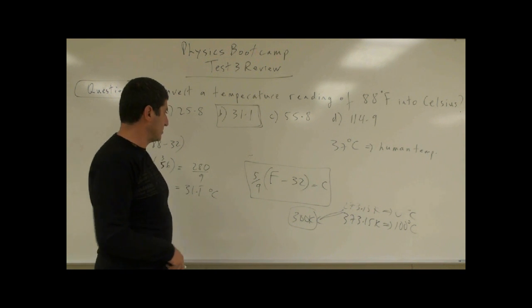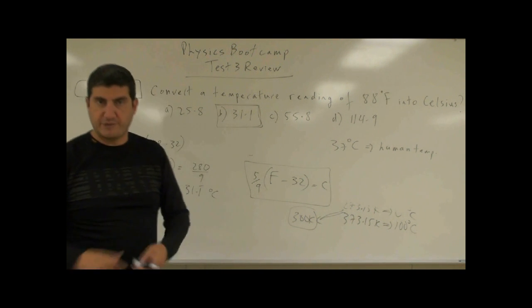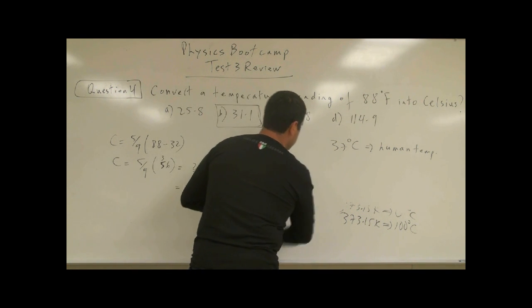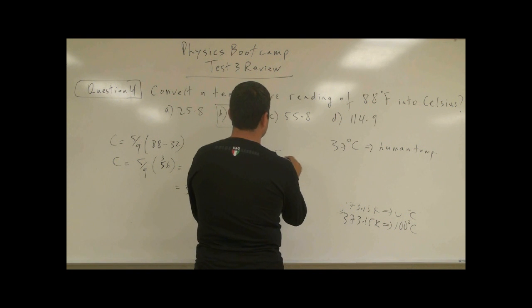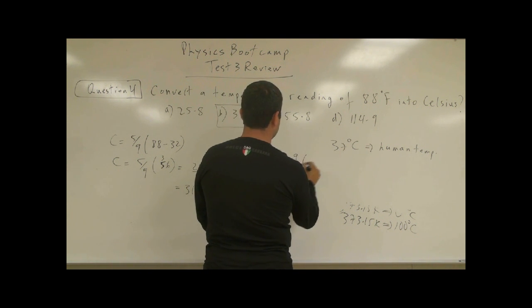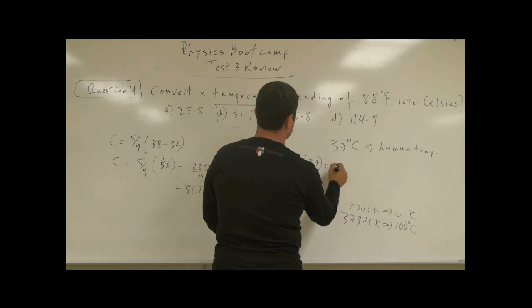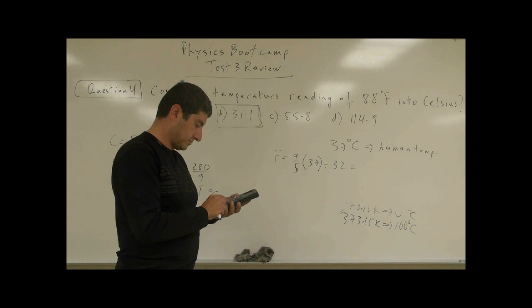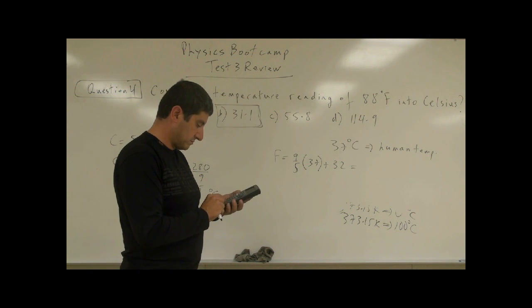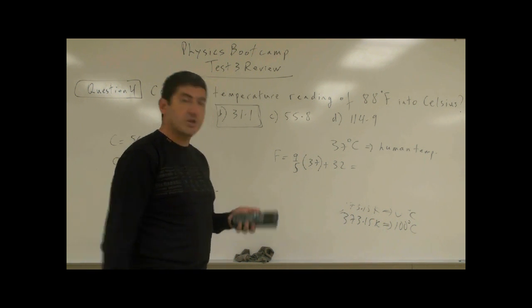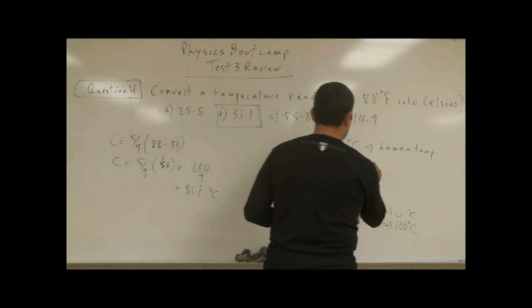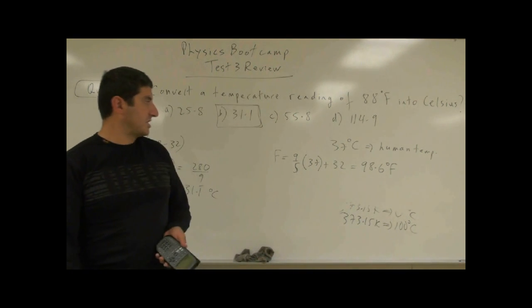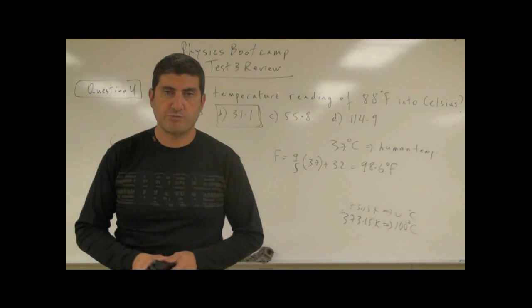How many Fahrenheit would that be? Well, now we can convert back to Fahrenheit. What would be the Fahrenheit of that? So the Fahrenheit would be 9/5 of 37 plus 32. So 9/5 of 37. And you get 98.6. So human body temperature is 37 Celsius corresponding to 98.6 Fahrenheit.